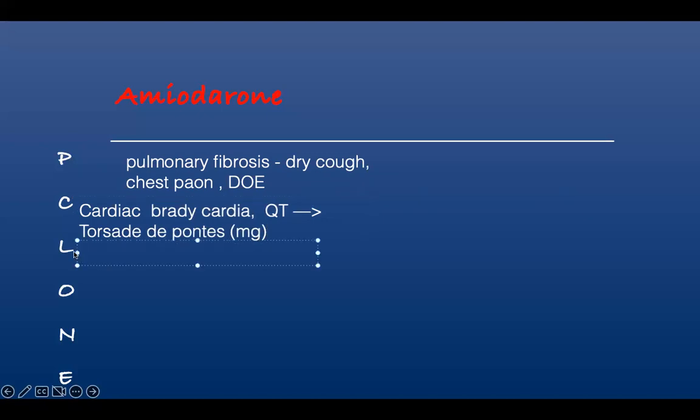Then the L is the liver, liver toxicity. We don't say don't use it, but you have to know that it's going to cause liver toxicity, cardiac toxicity, pulmonary fibrosis. It's affecting almost every organ in your body. And the O, you can guess what the O is. It's ocular. Or optic neuropathy.